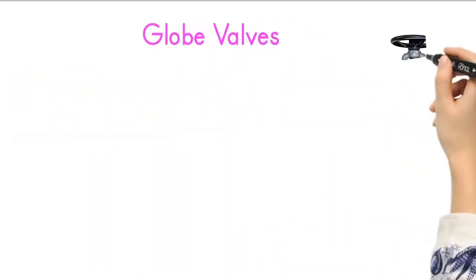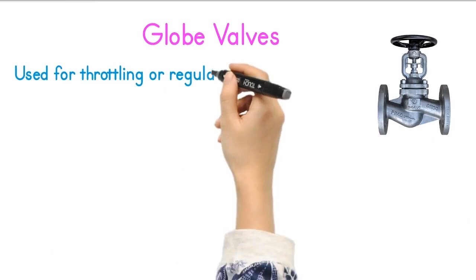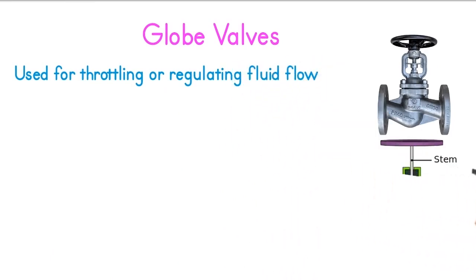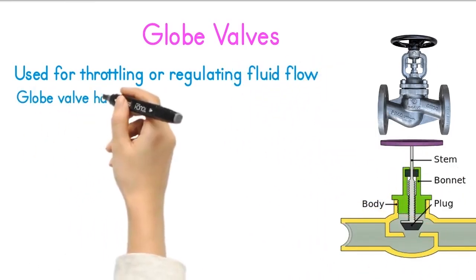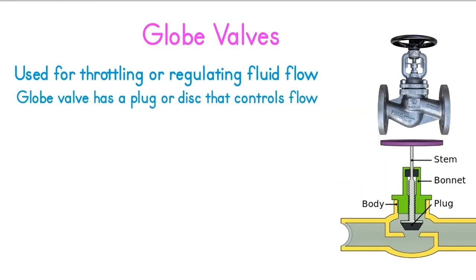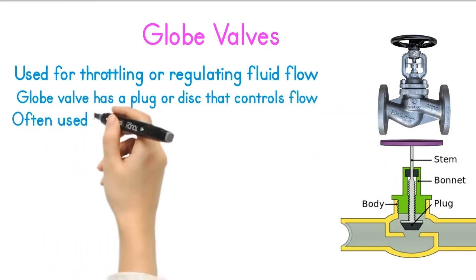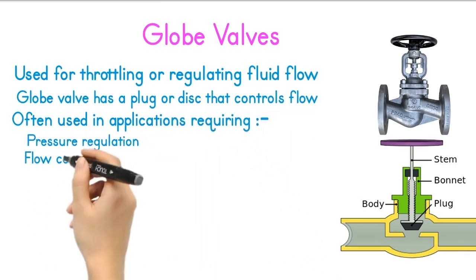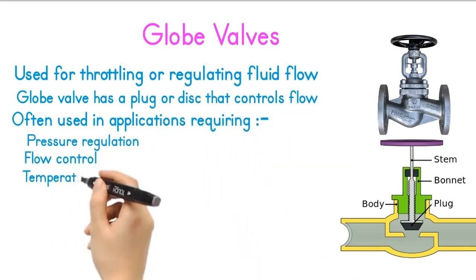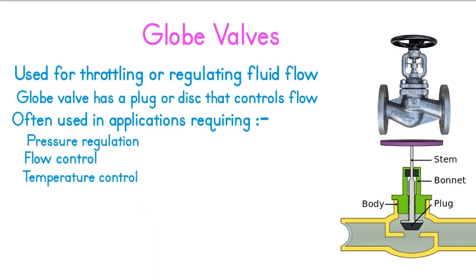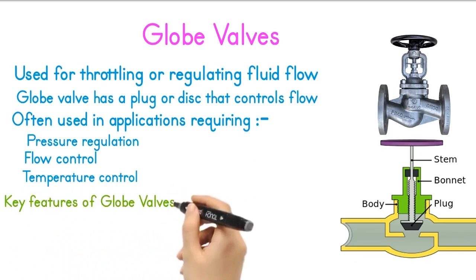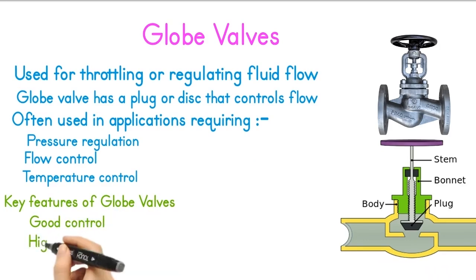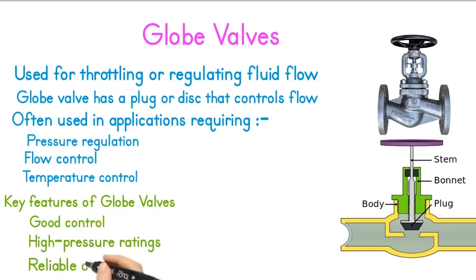Globe valves. A globe valve is used for throttling or regulating fluid flow — it's like a variable throttle. The globe valve has a plug or disc that controls flow, and is often used in applications requiring pressure regulation, flow control, and temperature control. Globe valves are commonly used in power plants, chemical processing, and oil and gas industries. Key features include good control, high pressure ratings, and reliable operation.